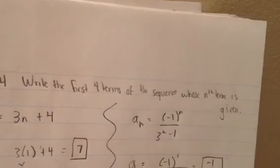I got number 14 in the practice test. It says to write the first four terms of the sequence whose nth term is given. The first term given is 3n plus 4.